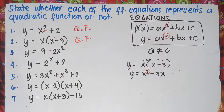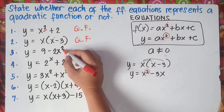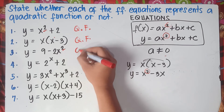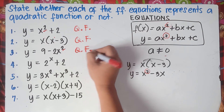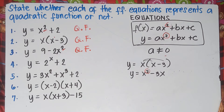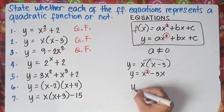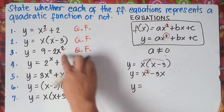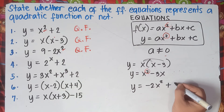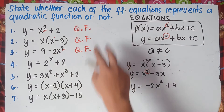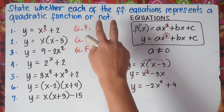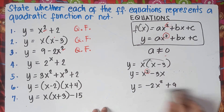Number 3 is also a quadratic function because the highest exponent of x is 2. You can arrange it as y = −2x² + 9. If you're only asked to determine whether it's a quadratic function or not, no need to rearrange — just check the degree.